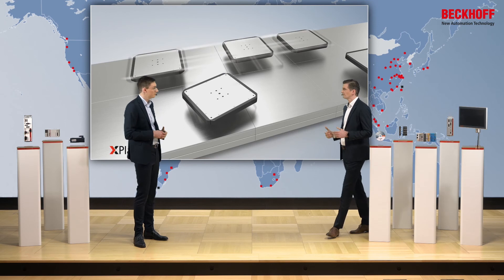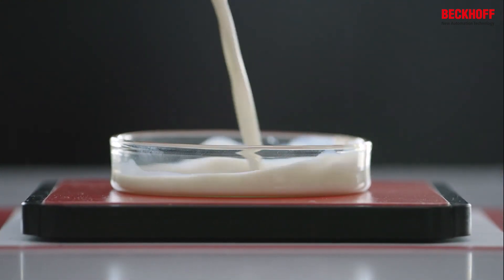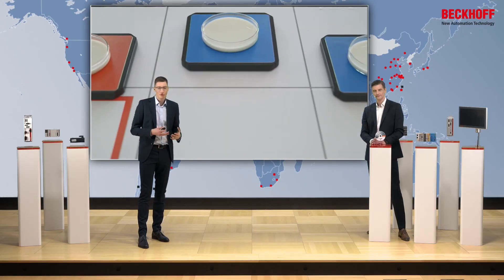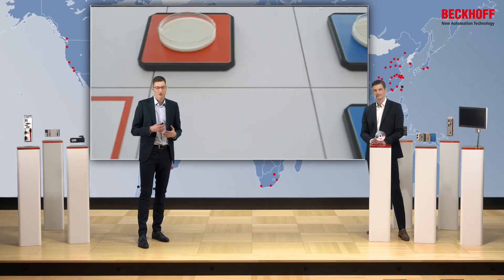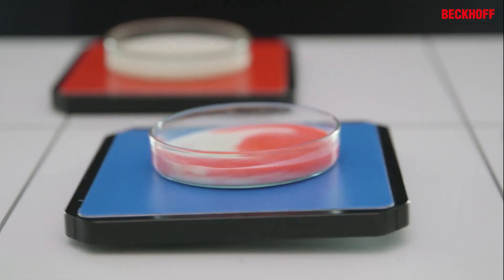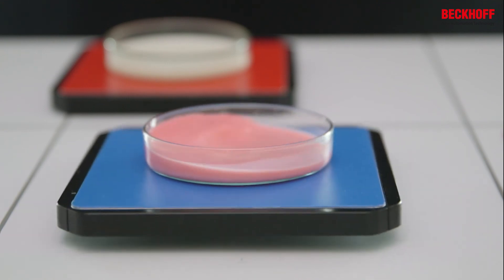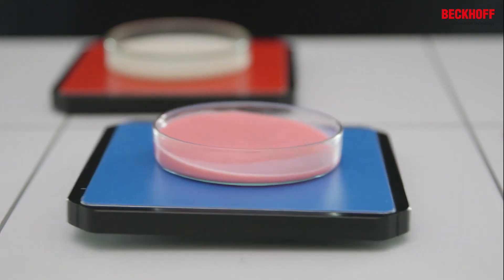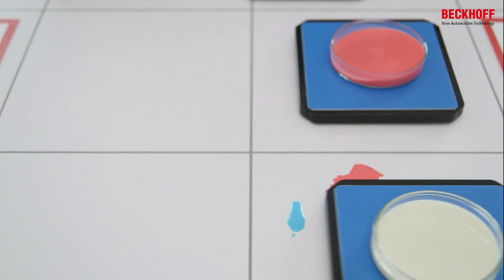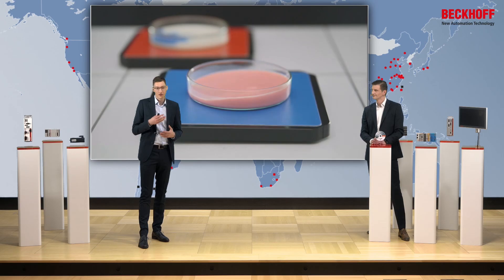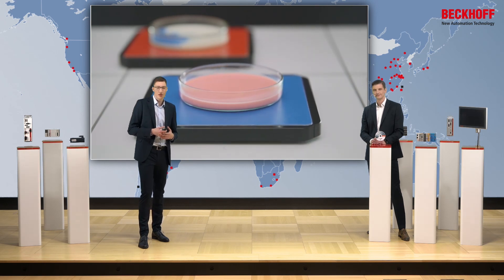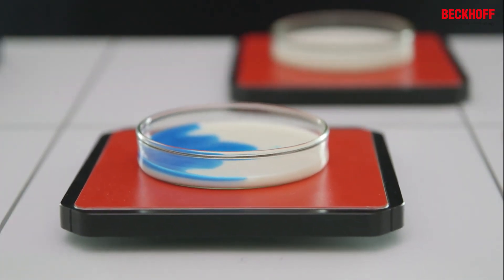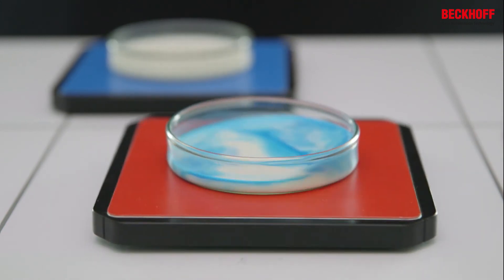What kind of other special applications do you see? We can utilize the 6 degrees of freedom for special applications as well. Here we see the example of the milk shaker — the Xplanar mover carries out a tilting movement which mixes together milk and food coloring. This means that the Xplanar takes over the task of an additional processing station, and the levitational effect at the same time takes care of limiting the distribution of contaminations within the Xplanar machine. The system shows its capabilities for very clean applications and handling food.